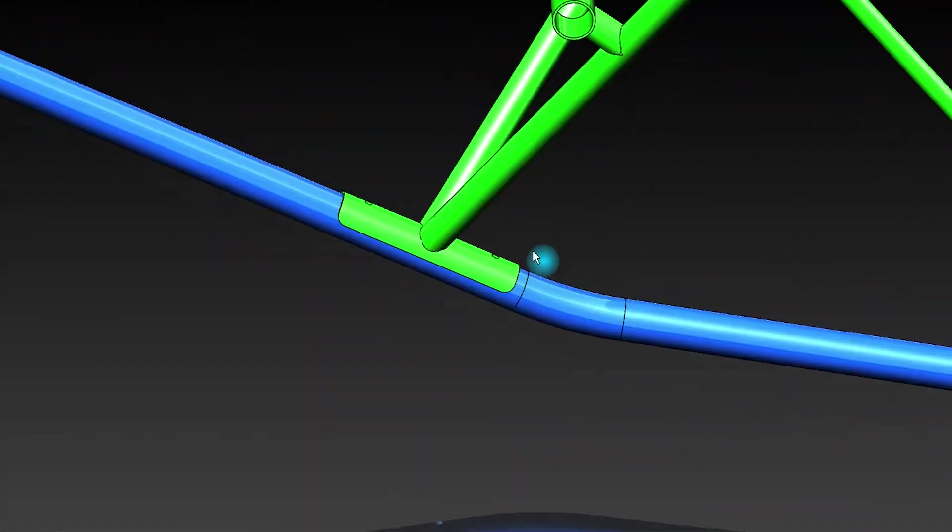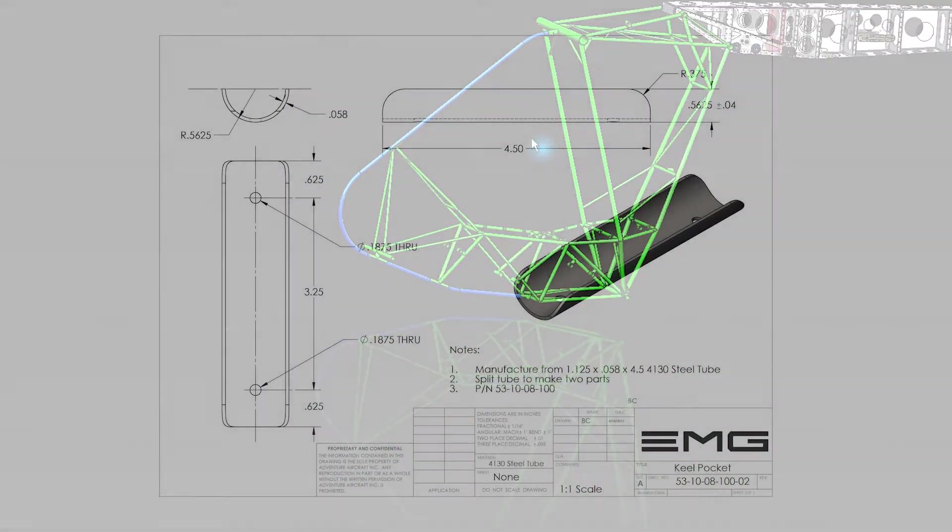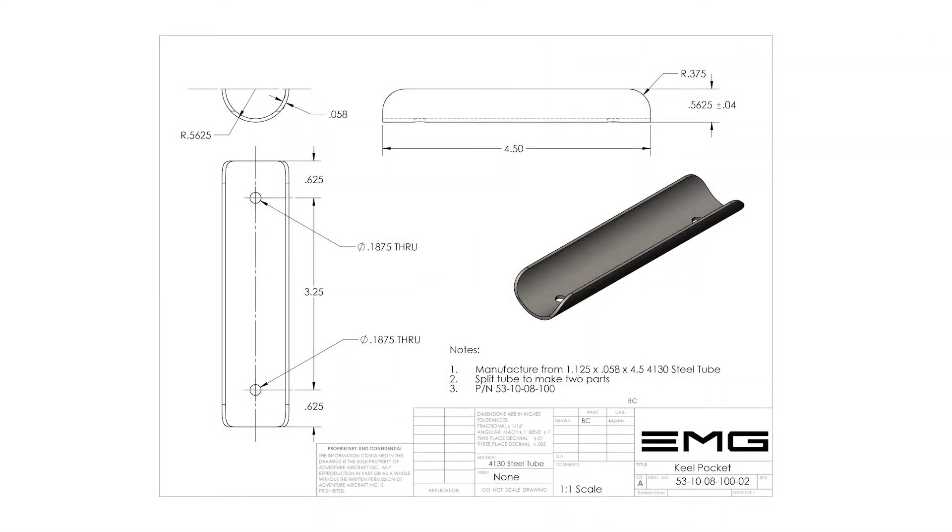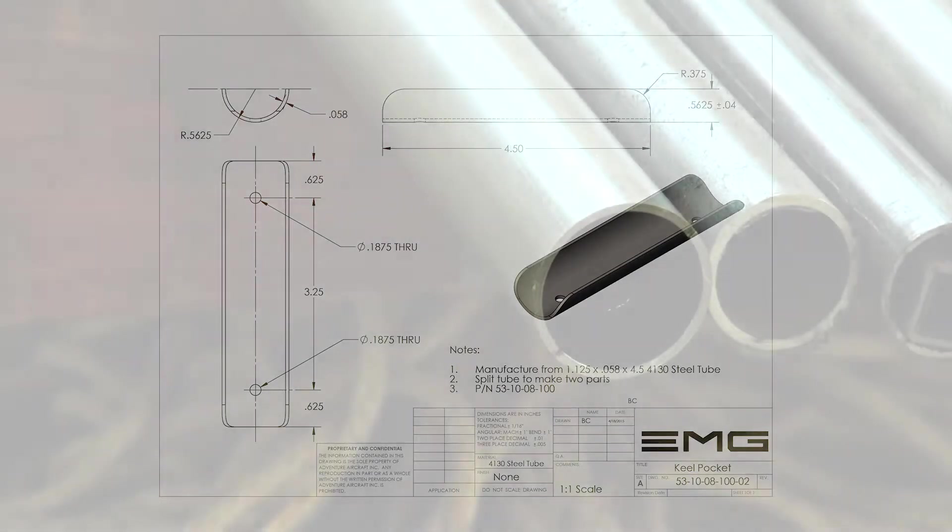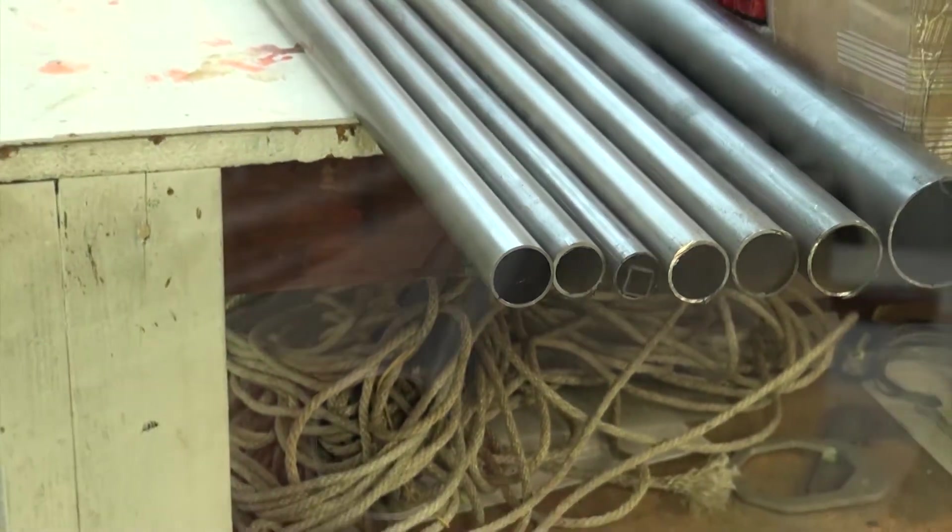Each of these three keel pockets are identical. We will want to refer to drawing 5310-08100-02. This part is manufactured from one and one-eighth inch diameter tubing with a .058 wall thickness 4130 chromoly steel.